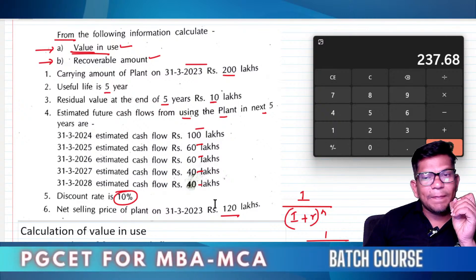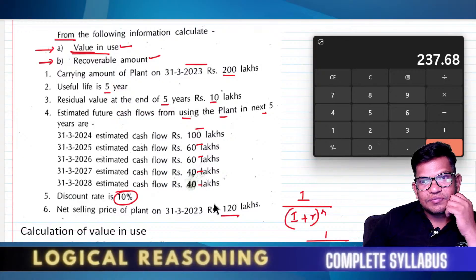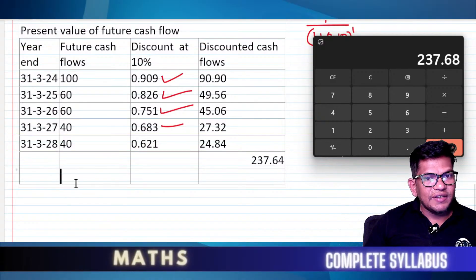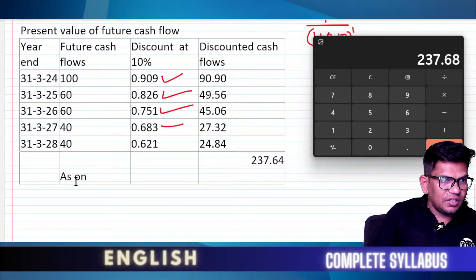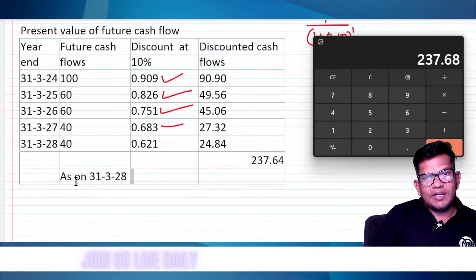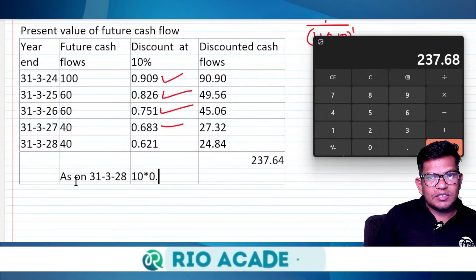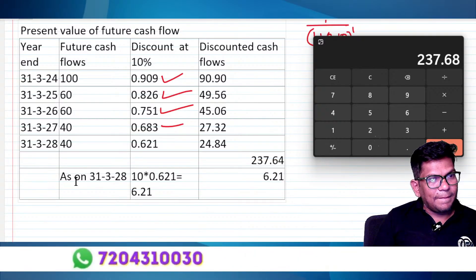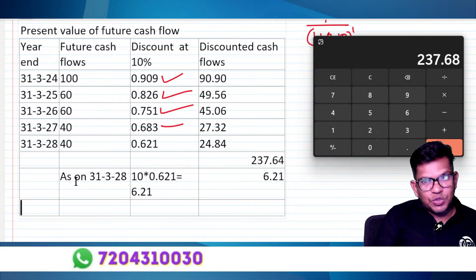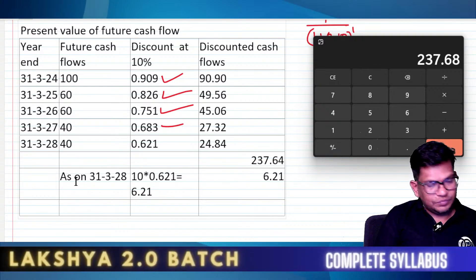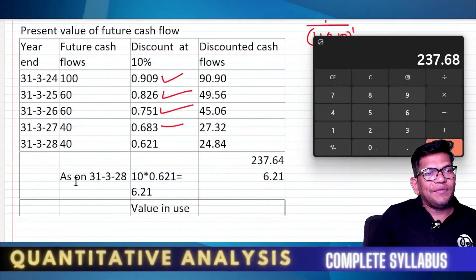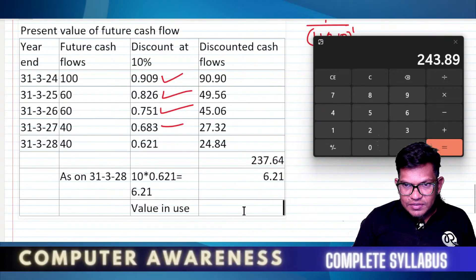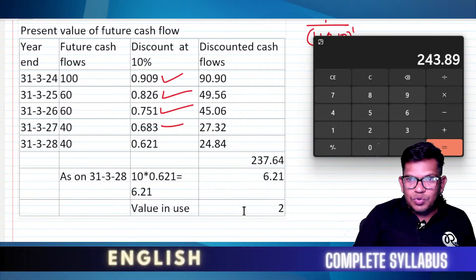We also need to add the present value of the scrap value. The scrap value is 10 lakh at 31st March 2028, multiplied by the discount factor 0.621, giving 6.21 lakh. Therefore, the value in use = 237.64 + 6.21 = 243.89 lakh.